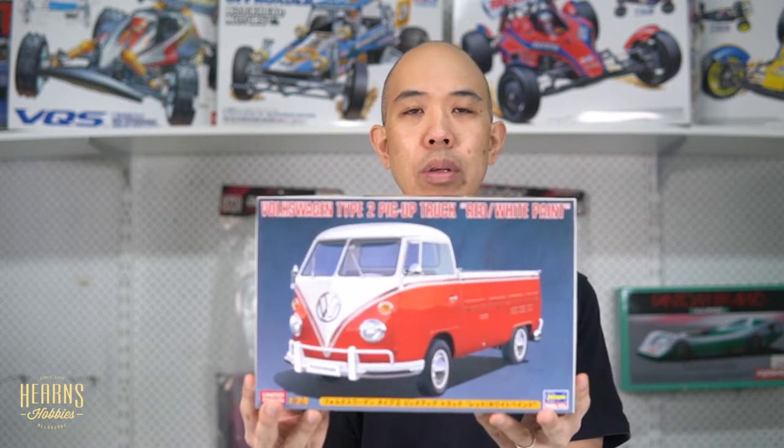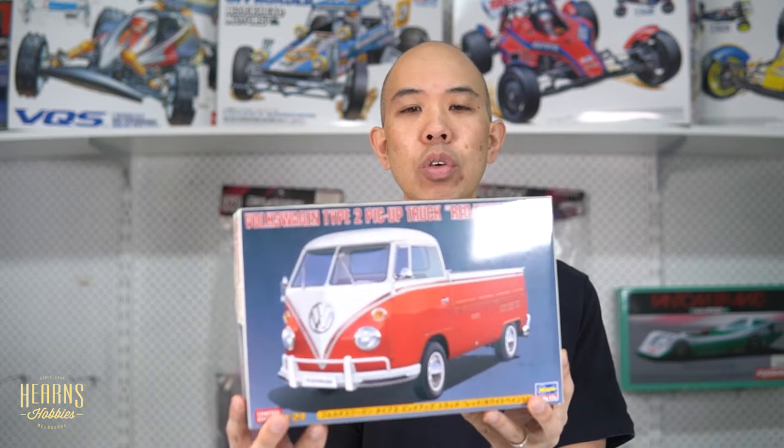Now, this is known as the T2, which is a Type 2, simply because this is the second type of vehicle that Volkswagen ever made. The Type 1 was the Beetle. So it's quite significant. This is one of the earlier versions with a split window, which is quite cool. Real ones of these are fetching quite a lot of money these days. It's also got those funky little wheels. Looks very nice.